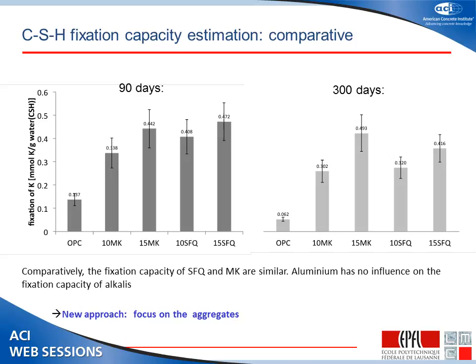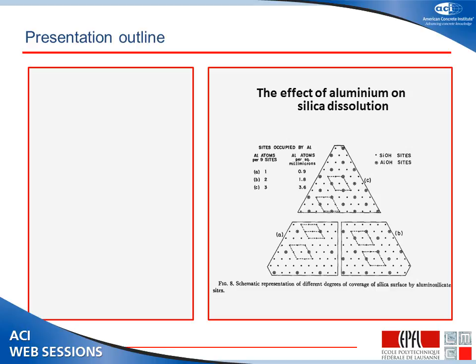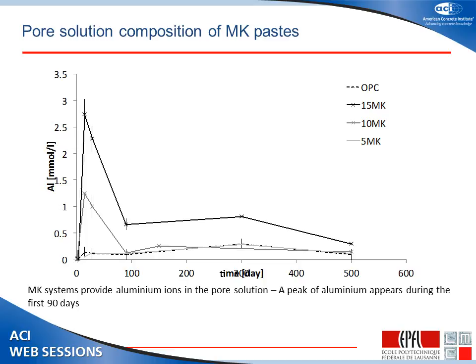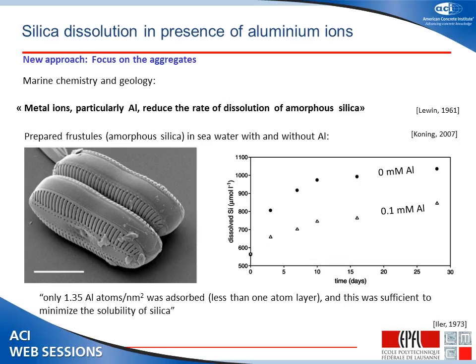We took another approach, focusing directly on the aggregates. From the literature, absorption of quite low amounts of alumina on the surface of silica can make a very big difference in its rate of dissolution. Looking again at our pore solutions, this time at the alumina content, we see that the more metakaolin we introduce, the more alumina we get into solution — it seems to be a transitory effect, peaking around 28 days and then leveling off. The silica fume systems, as expected, show no measurable alumina in solution. Concentrations in the millimole range have been shown in marine biology studies to significantly slow dissolution of silicate structures.